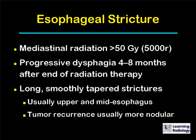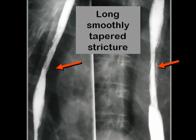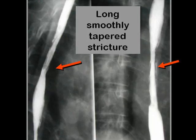Esophageal strictures produced by radiation therapy tend to be long and smoothly tapered strictures. They usually occur in the upper and mid-esophagus, and they can be differentiated from recurrent tumor by the fact that recurrent tumor is usually much more nodular than a radiation stricture. This is an example of a radiation stricture of the esophagus — a long, smoothly tapered stricture of the upper esophagus in a patient who received radiation for carcinoma of the lung.